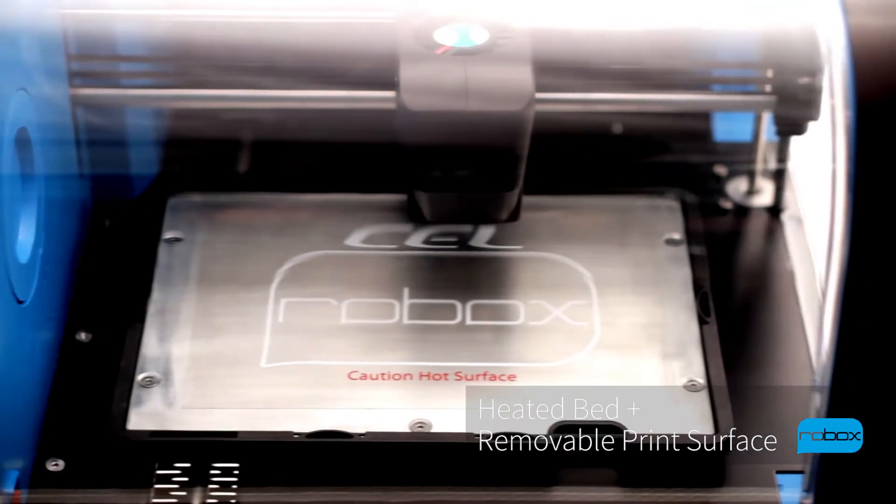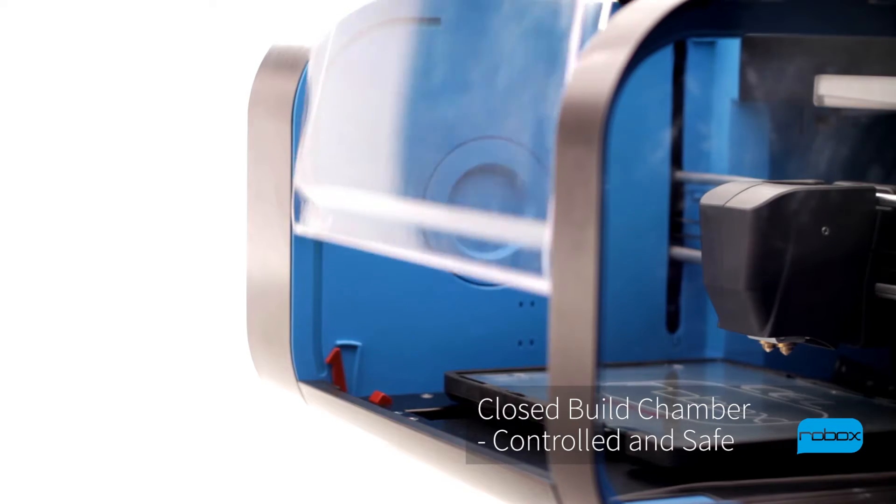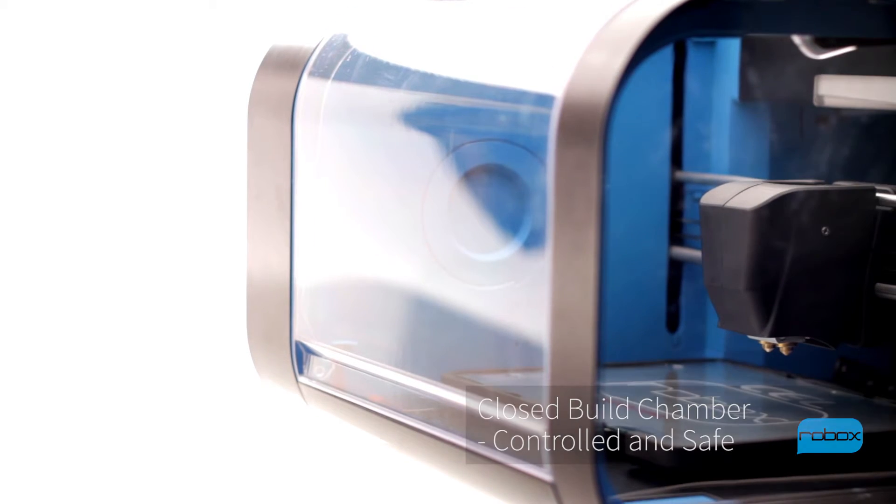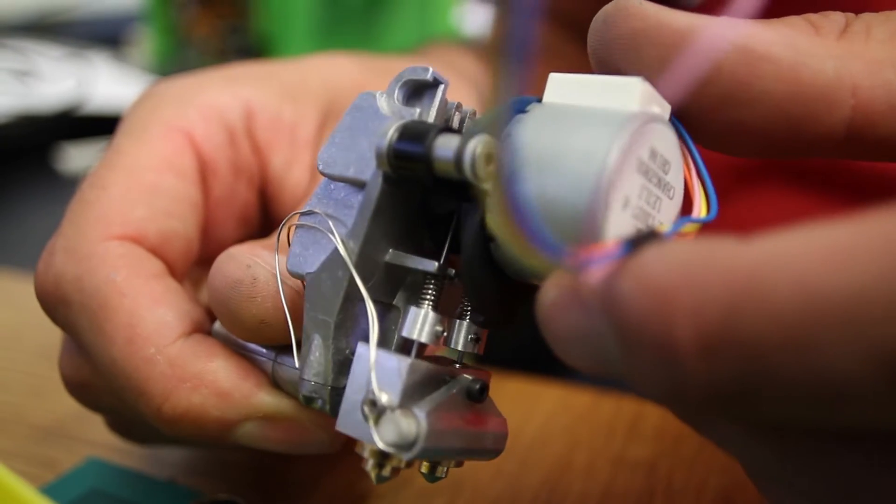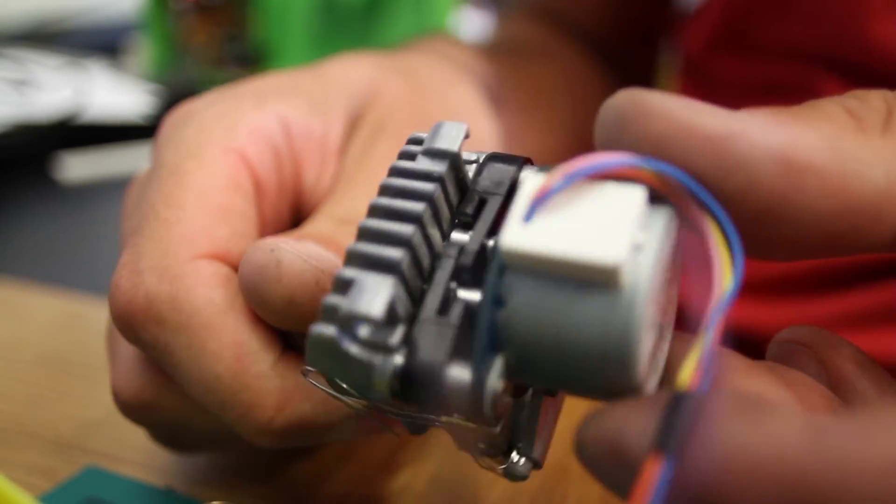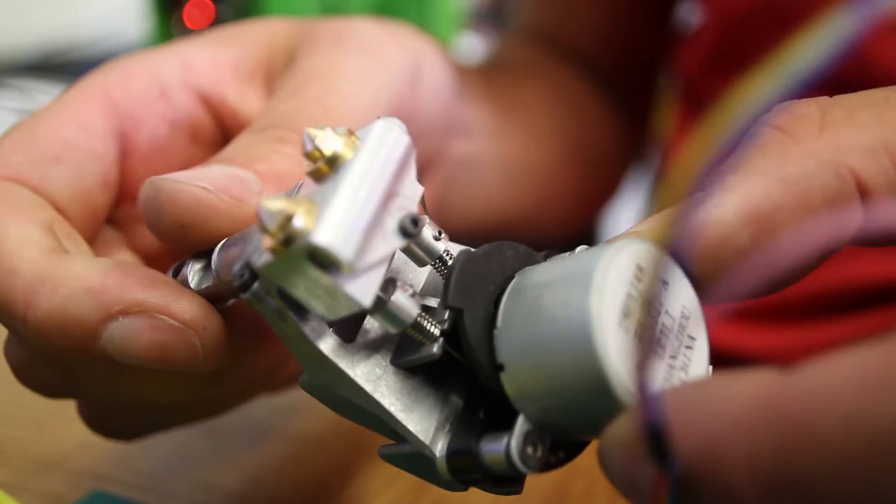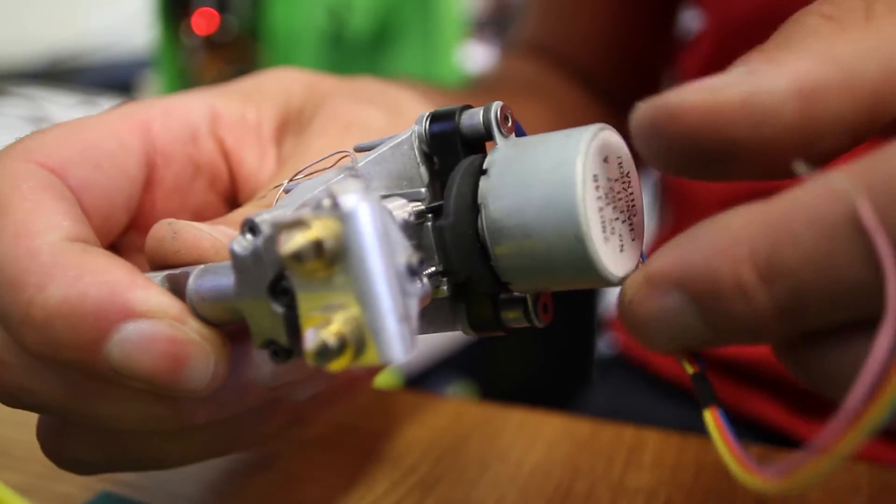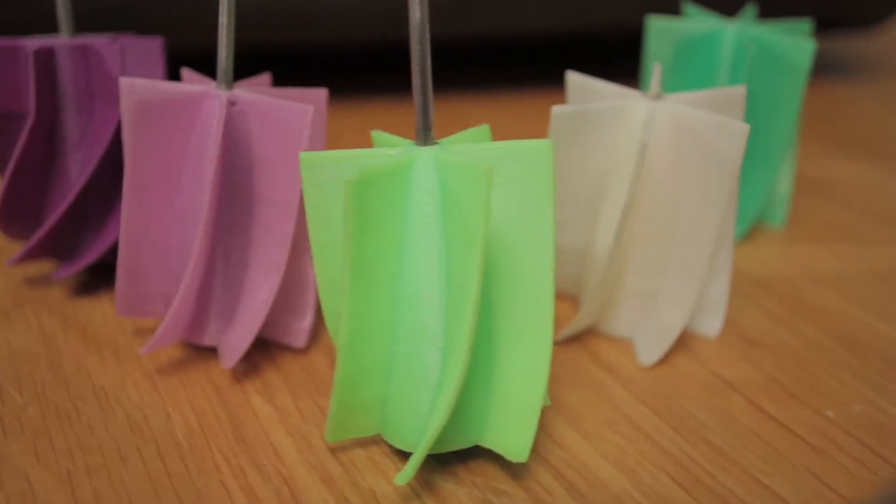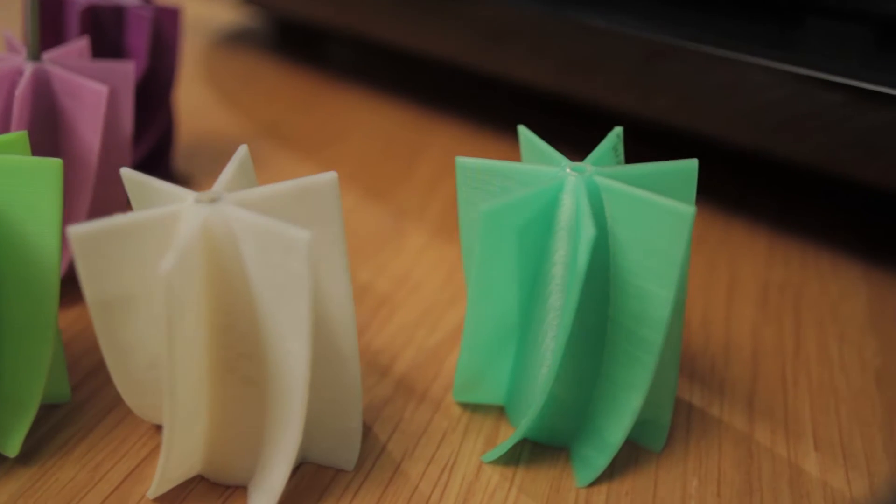ROBOX has every system in place to print with the materials available on the market at the moment. We have a nozzle system which includes needle valves, so we're able to shut off the flow of plastic instantly. This means no more oozing, no more stringing as you move between parts, and no more bumps on the outside. This means perfect parts every time.